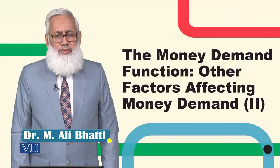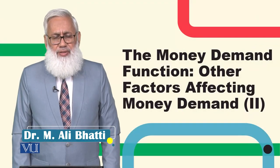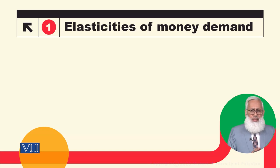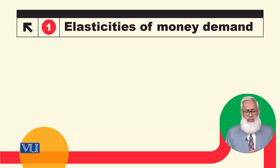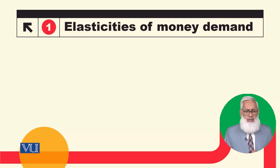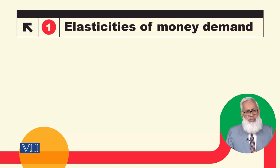The Money Demand Function: Other Factors Affecting the Money Demand. In the last module, we discussed money demand — what it is, what the determinants are, and what factors affect it. We saw the price level, how income affects it, and how the interest rate — nominal, real, or expected inflation — affects it.